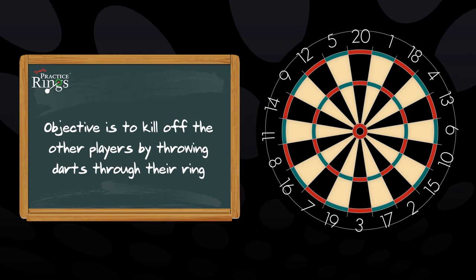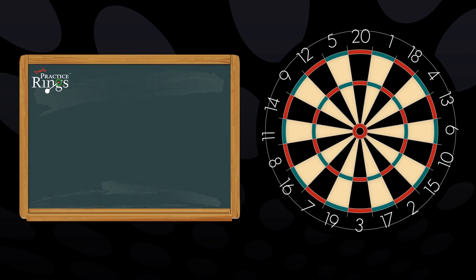The objective of the game is to kill your opponent off by throwing darts through their ring. Players start with a total of 3 lives. This is the maximum number of lives each player can possess at any one time.